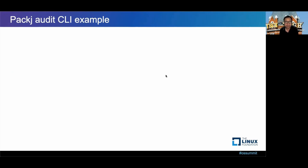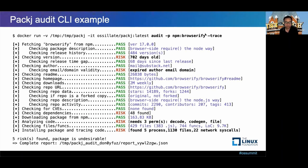Let's see Package in action. Specifically, let's audit a package called Browserify from NPM and trace the installation as well. There's a lot going on here, so let's unpack it slowly. First, it fetches the Browserify package from NPM using the npm.js API, and it found the latest version 17.0.0. Then it checks the package description and found something to display.